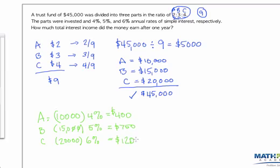And the question is asking for the total interest income, the money earned after one year. So I add these up. $1,200 plus $750 is $1,950 plus $400 is $2,350.